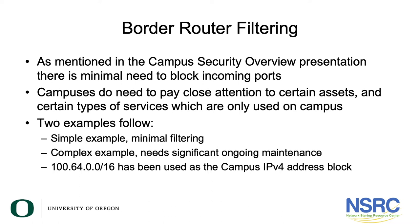The two examples I'm going to show you: one is a simple example with minimal filtering, and the other is a complex example more commonly used in enterprise networks that need significant ongoing maintenance. For these examples we're just going to use 100.64/16 as the campus IPv4 address block.